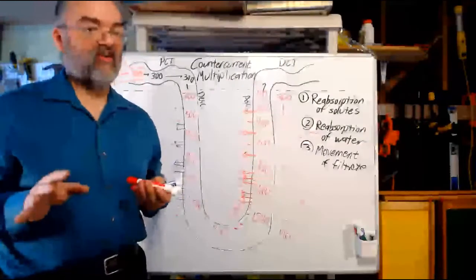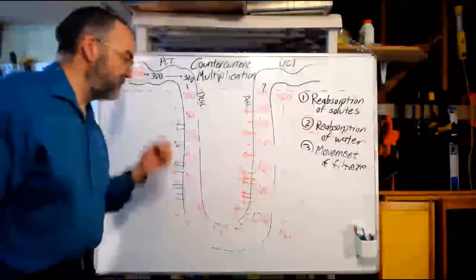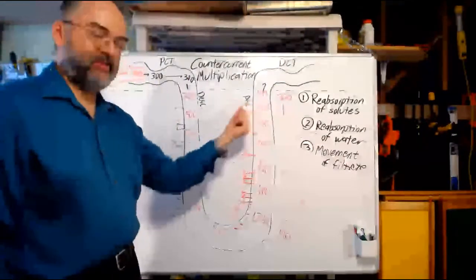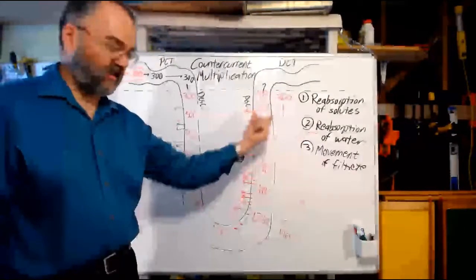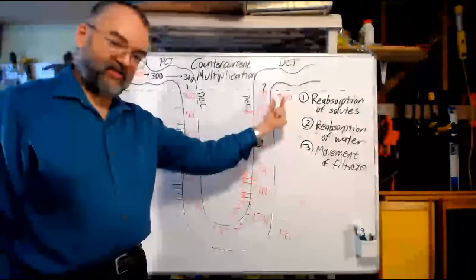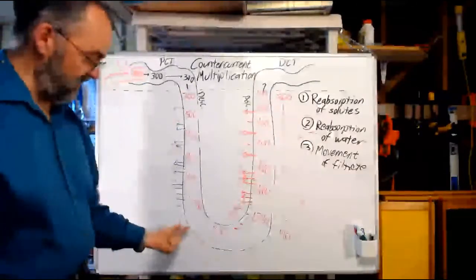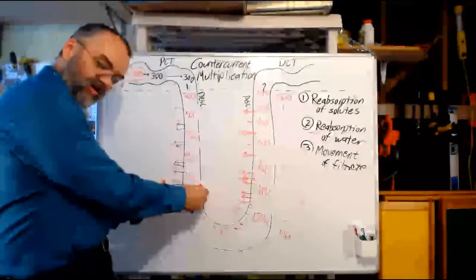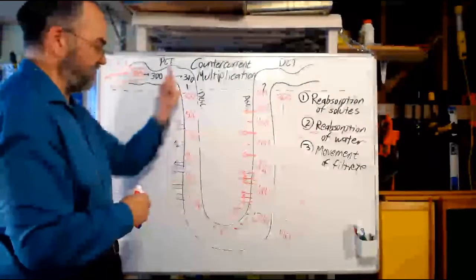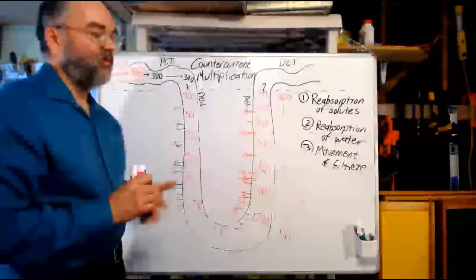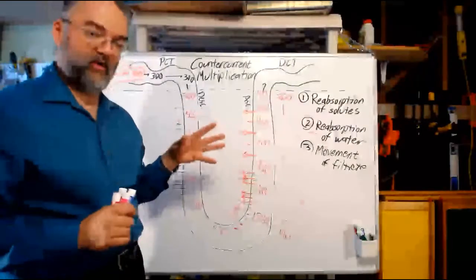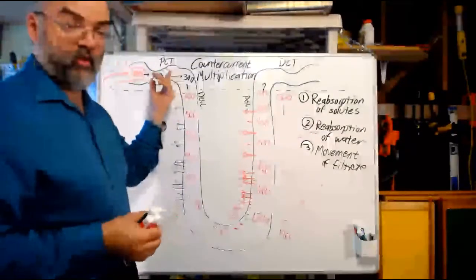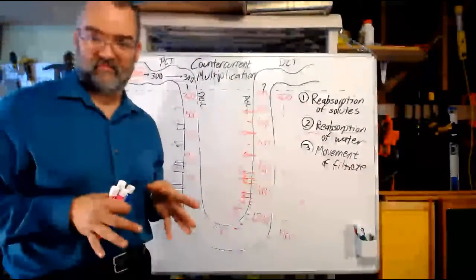The vasa recta are also involved. As the vasa recta come down along the ascending limb side, they pick up some of the solutes being pumped out, so the blood in the vasa recta gets saltier as it comes down. Then as it comes up, a little bit of the salt leaves, but more importantly, that salt allows the vasa recta to pick up the water that's reabsorbed from the descending limb and carry it up out of the kidney. In the end, the vasa recta are part of what prevents the medulla from just getting saltier and saltier — they take some salt on the way down and then take some water on the way up, letting the medullary osmotic gradient be maintained.